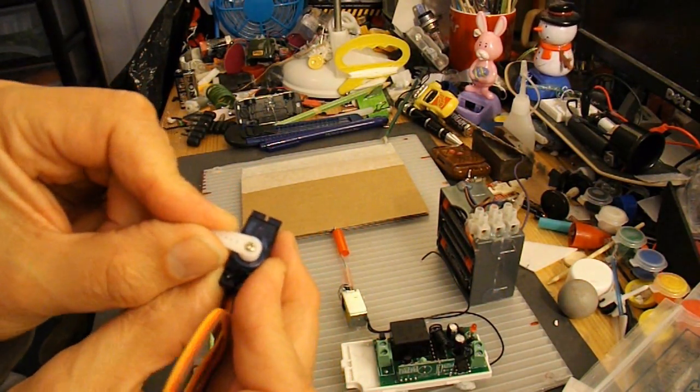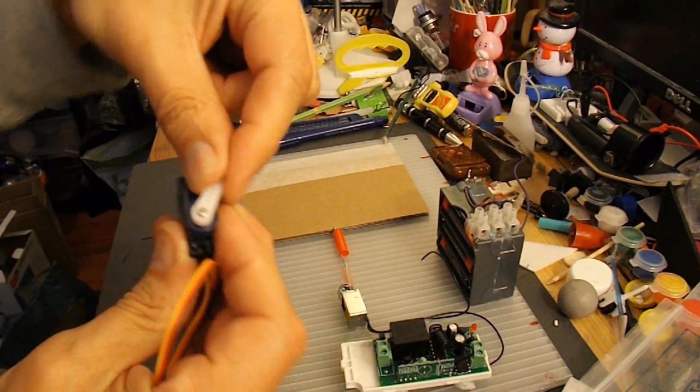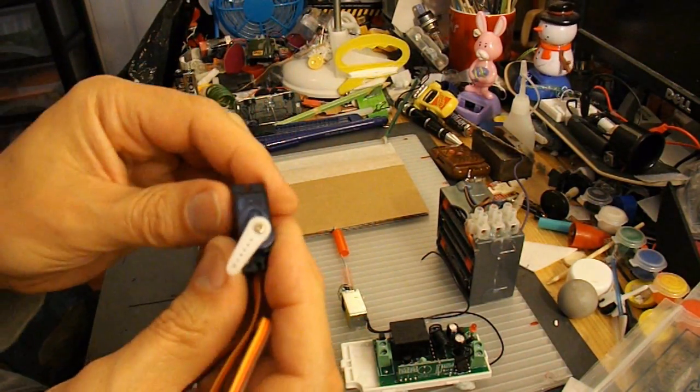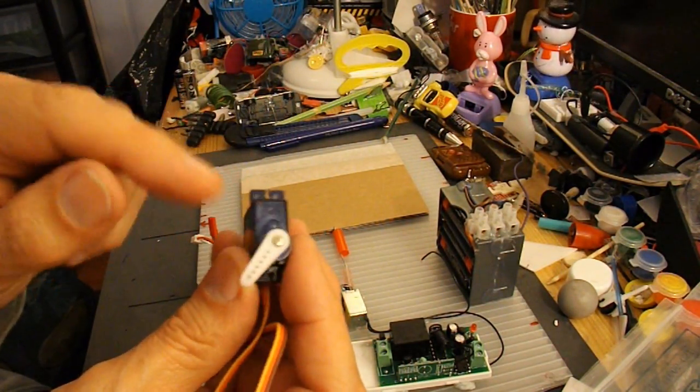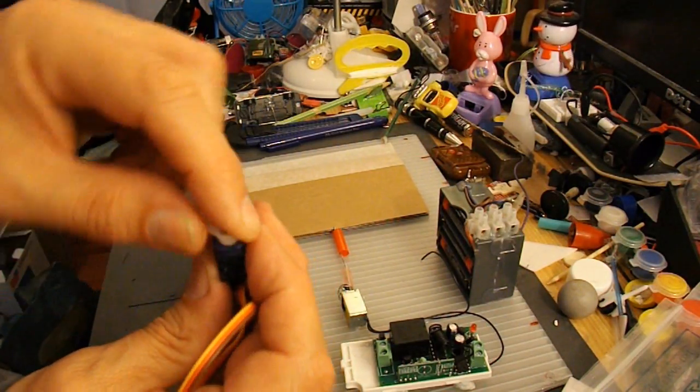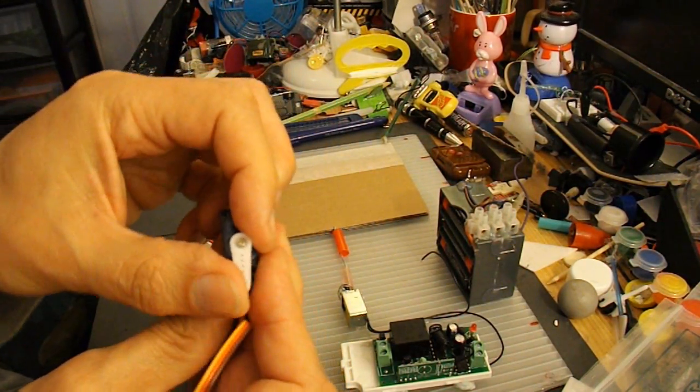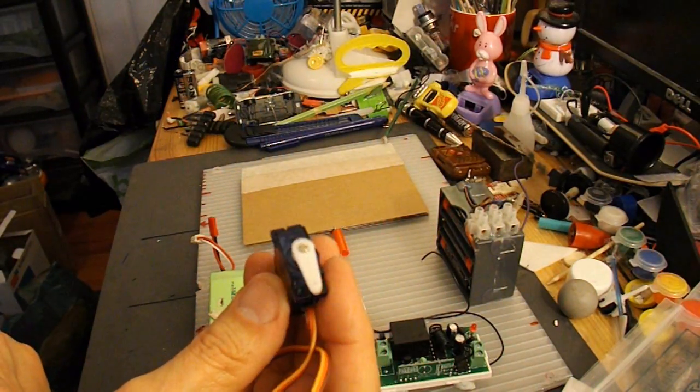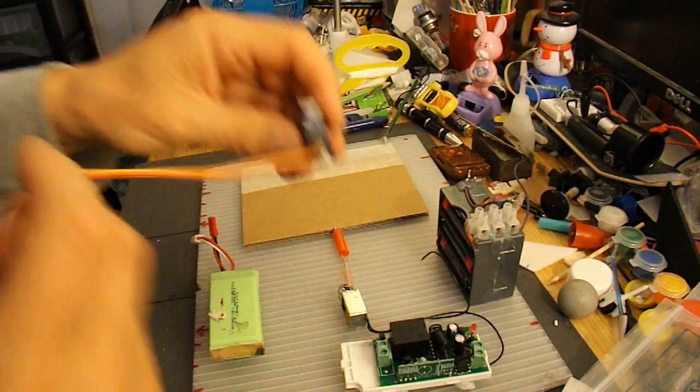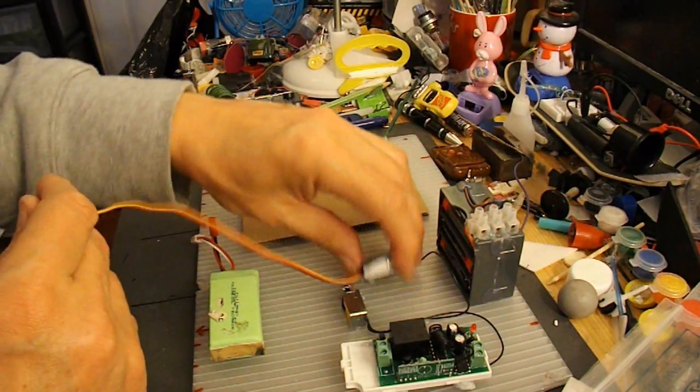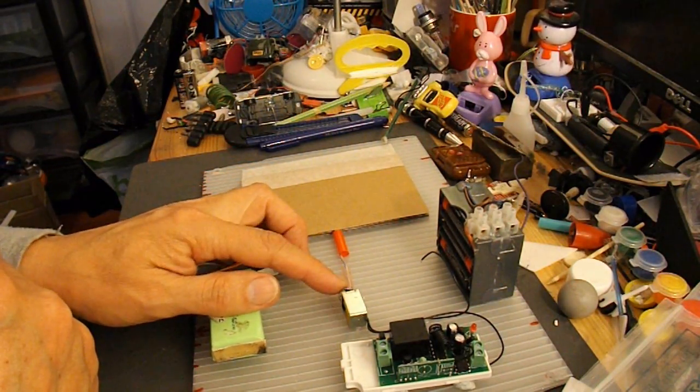So it will just keep going round until it meets the stop, because there is a stop in there that stops it going the full 360 degrees. Now, that would work. You could do that, and you could get that to move the same lever that this solenoid's moving.